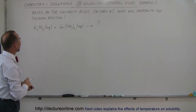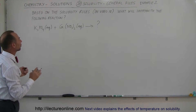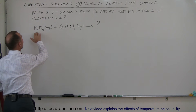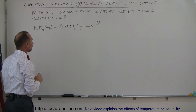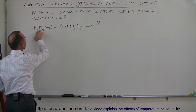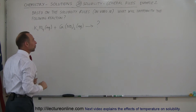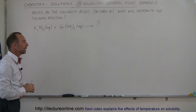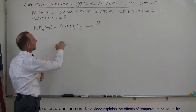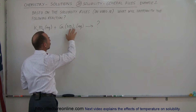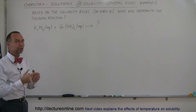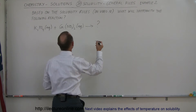Here we have potassium phosphate and calcium nitrate in an aqueous solution. So what will happen? Potassium phosphate is soluble because normally phosphate is not soluble, but since it's paired together with an alkali metal, it will be soluble, so those will split up. And calcium nitrate — any nitrate compound tends to be soluble — so both of those will break apart into their separate ions.